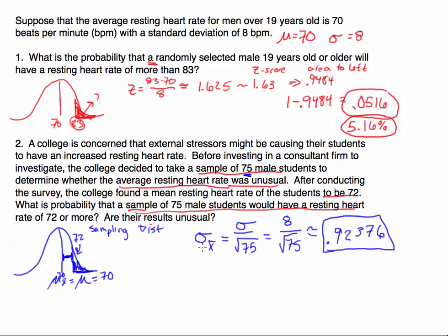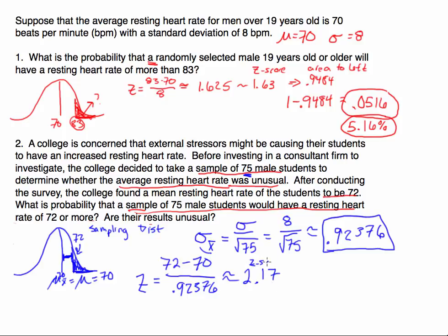So here's our standard error — that is the standard deviation of the sampling distribution. I want to know the z-score: how far away is 72? I'm going to do the regular z-score here: take the observation (the sample mean), subtract the sampling distribution mean, and divide by our standard error, which was 0.92376. So 2 divided by 0.92376 is approximately 2.17 — this is our z-score.